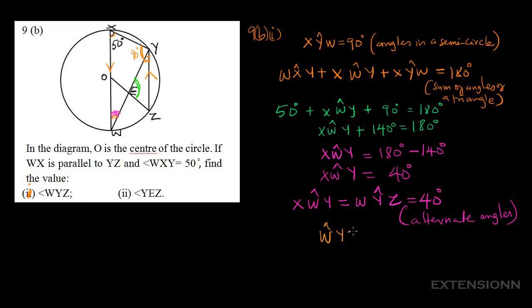The angle WYZ equals 40 degrees — that's the answer for the first question. For the second question, we need to find angle YEZ. We have the angle at W as 40 degrees. We can find the angle at this junction by adding the two known angles and subtracting from 180°. Once we get that angle, we can easily find YEZ.